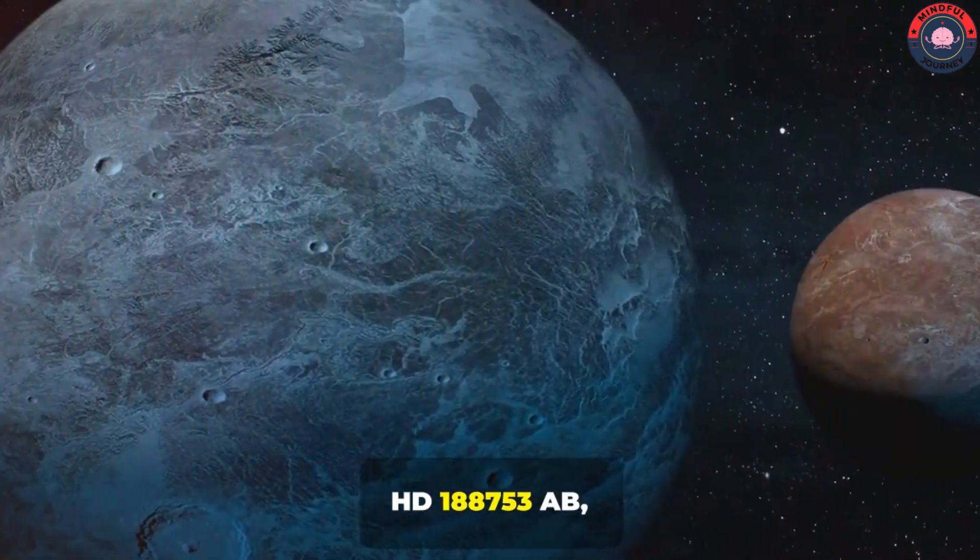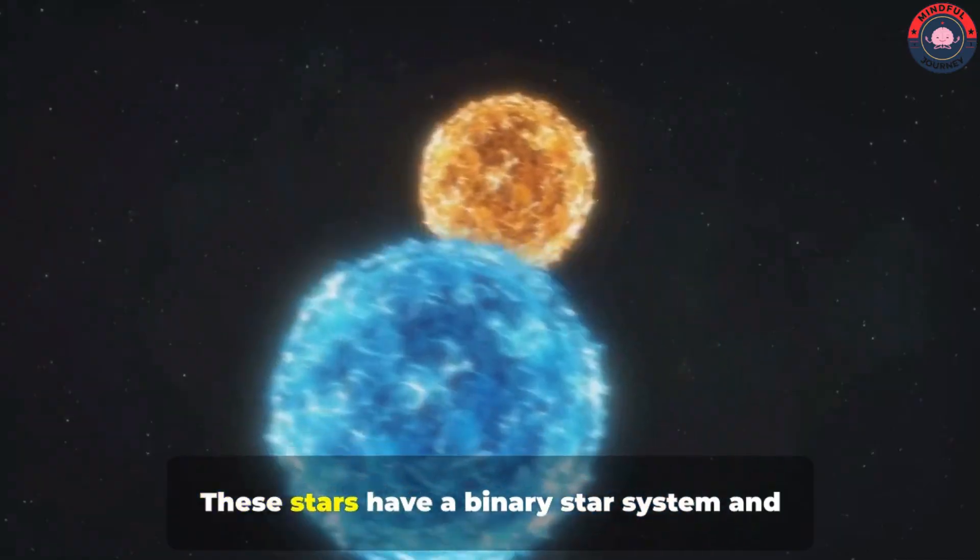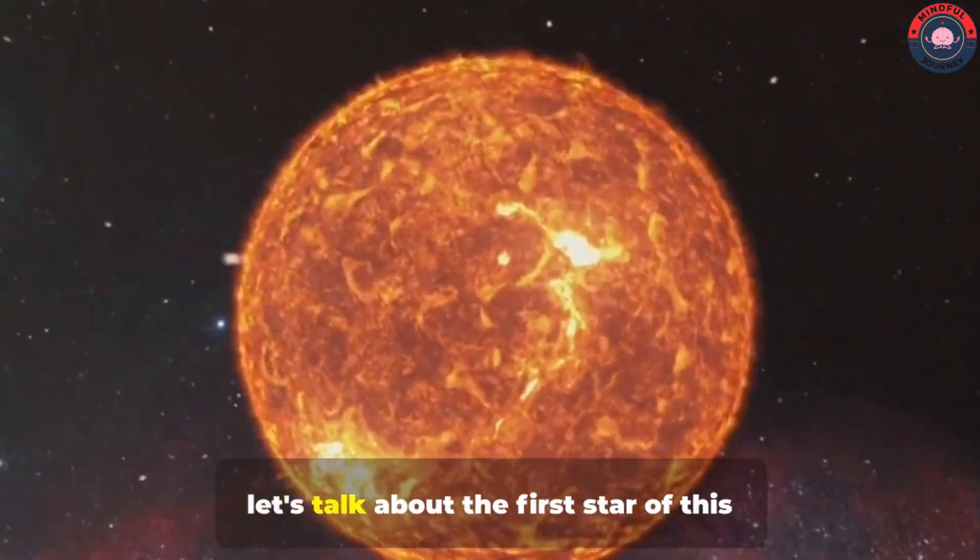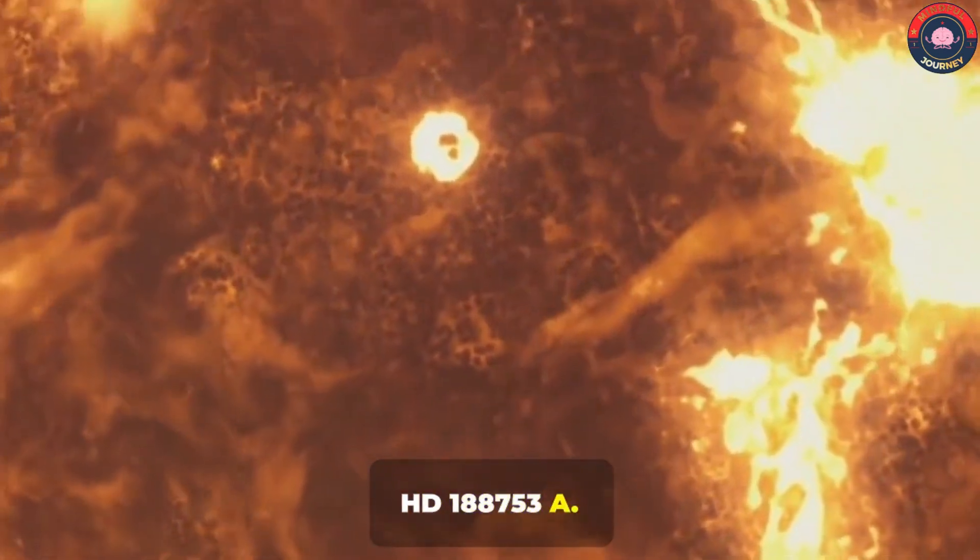There is a planet in our universe, HD 188753 AB, which revolves around three stars. These stars have a binary star system and a normal star. So first of all, let's talk about the first star of this unique system, HD 188753A.